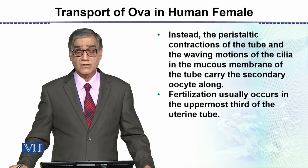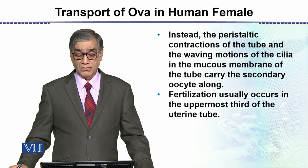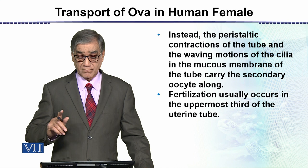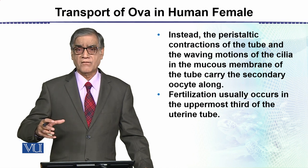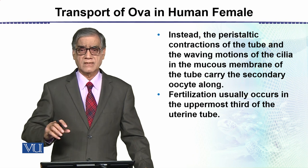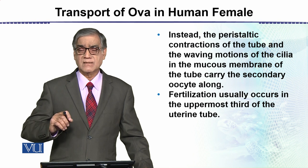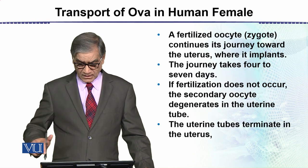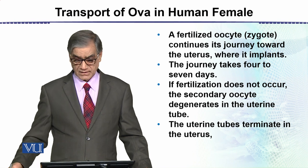The membrane of the tube carries the secondary oocyte along. Fertilization usually occurs in the uppermost third part of the uterine tube — یہ فمبری کے پورن بعد جو ہی egg اس uterine tube میں enter ہوتا ہے تو actually that is the point where fertilization occurs.